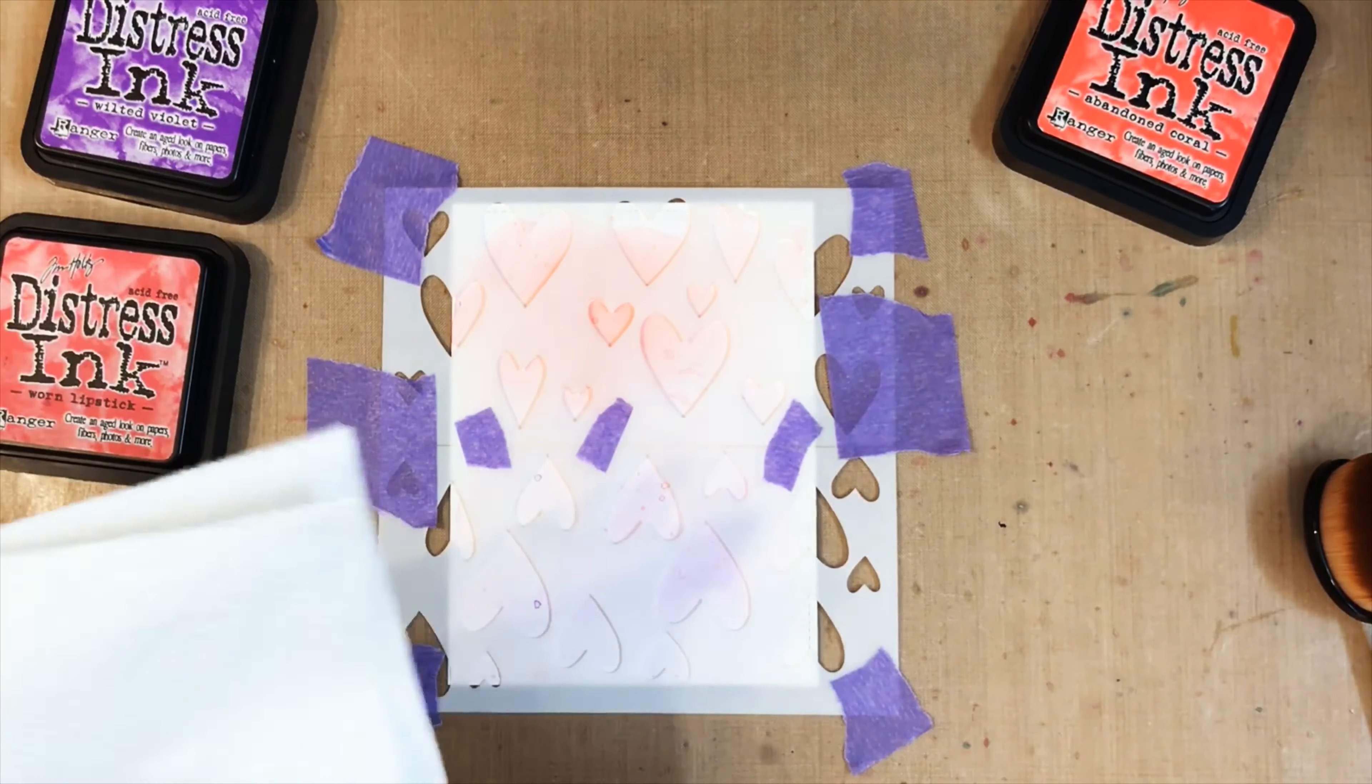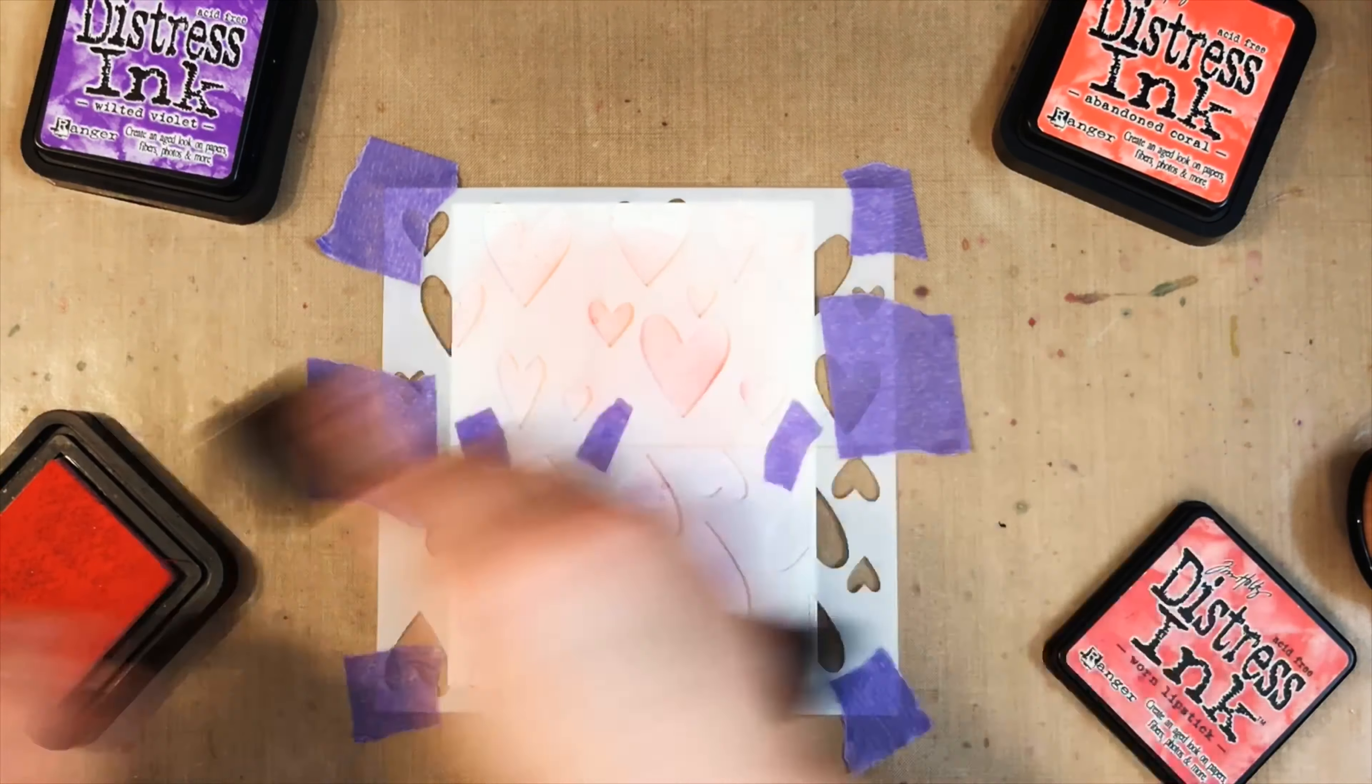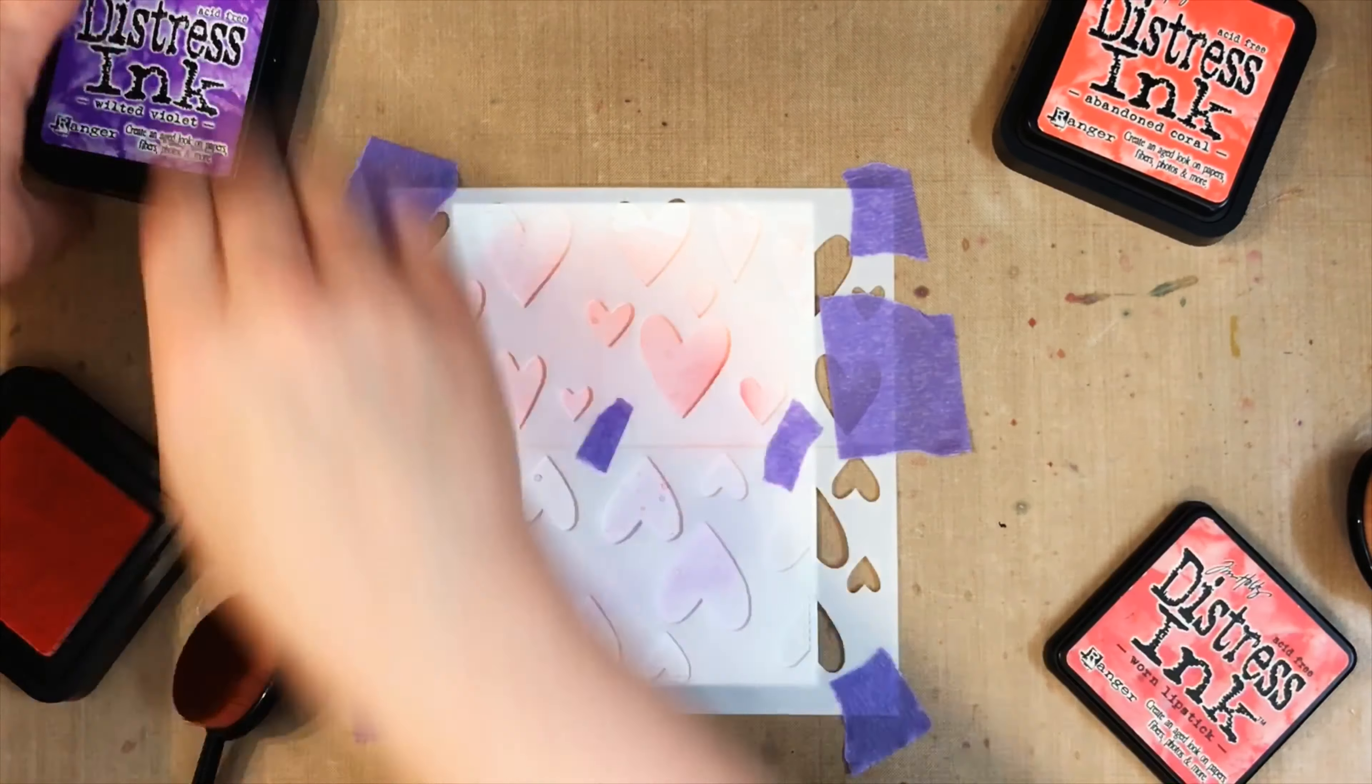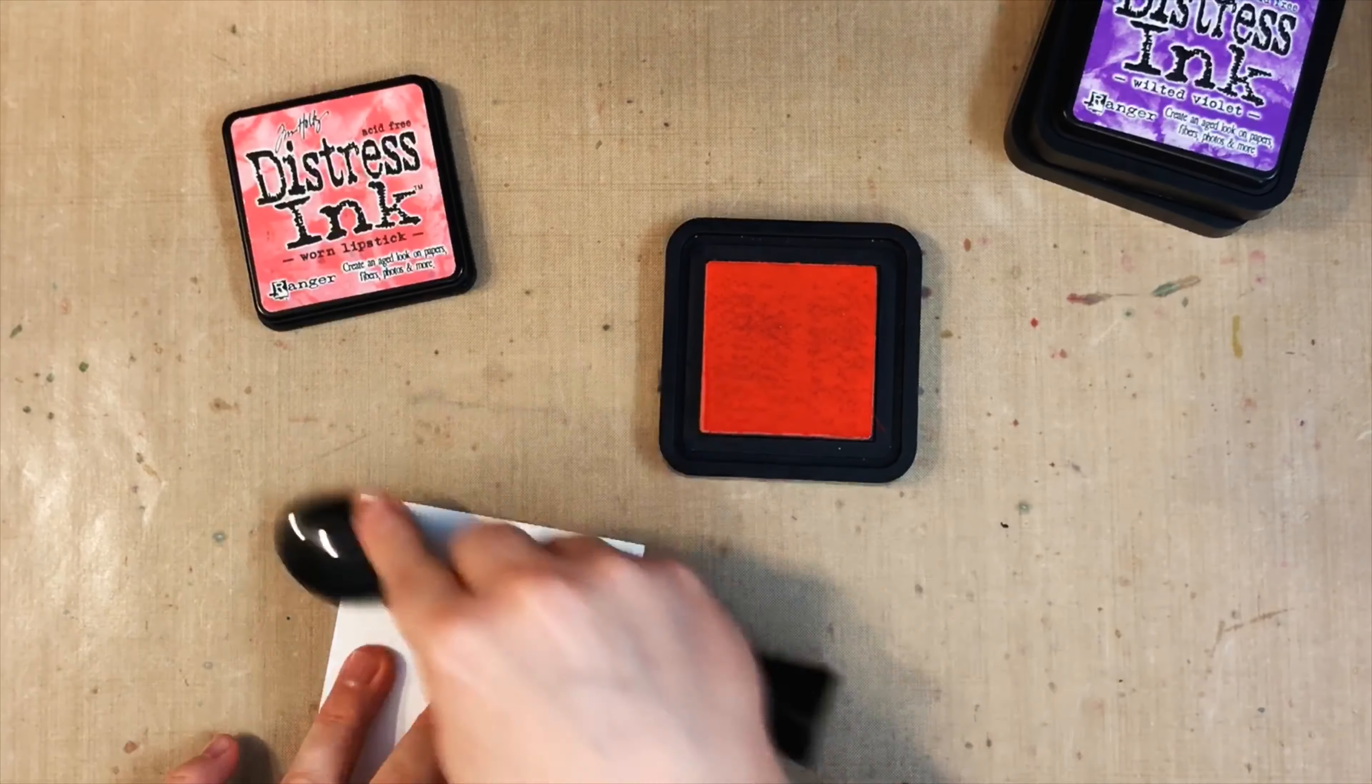I'm just adding more of those same three colors kind of in the same area that I had painted, just kind of deepening it and giving it some texture. I love this stencil because you can use it in different ways. You can layer it or you can flip it over and put it top to bottom and make that funny pattern that I have.